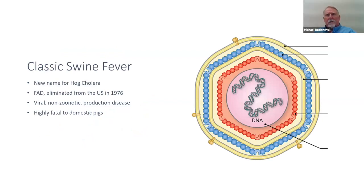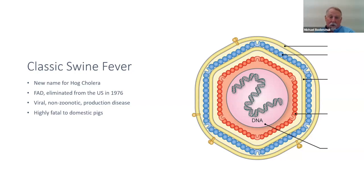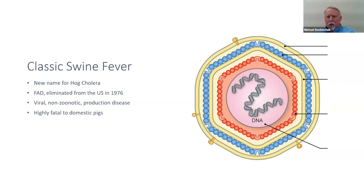Now I want to talk about diseases we categorize as foreign animal diseases — foreign to the continental U.S., though they may be endemic in other countries. Classic swine fever is the new name for what used to be called hog cholera. It was eliminated in the U.S. in 1976. It is a virus, non-zoonotic, but devastating to pigs — causing 80 to 90-plus percent fatality in domestic pigs. We're doing classic swine fever surveillance just to make sure the disease doesn't pop up somewhere, but it's not currently found in the U.S.